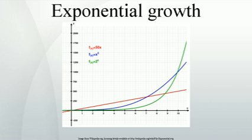Economic growth is expressed in percentage terms, implying exponential growth. For example, U.S. GDP per capita has grown at an exponential rate of approximately 2% since World War II. In finance, compound interest at a constant interest rate provides exponential growth of the capital (see also Rule of 72). Pyramid schemes or Ponzi schemes also show this type of growth, resulting in high profits for a few initial investors and losses among great numbers of investors.